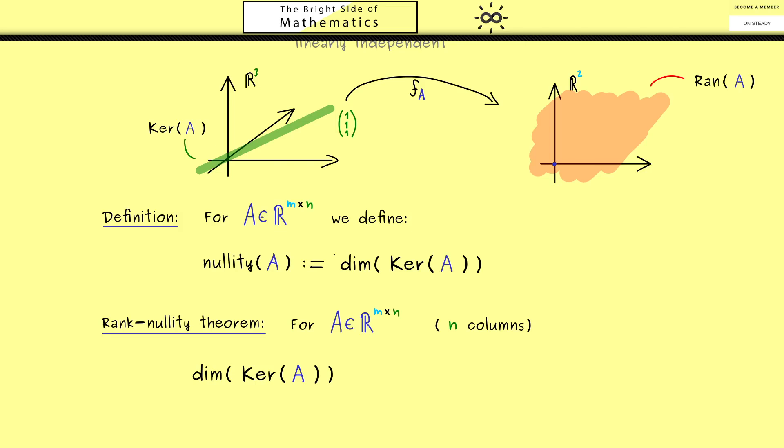So in this example here, we have a one-dimensional subspace that has to collapse to the origin. Okay, and now we can put this into a general formula. So we add two dimensions. We add the nullity and the rank of the matrix. So we have the dimension of the kernel on the left-hand side and the dimension of the range on the right-hand side. And together they have to be equal to the dimension we put in on the left-hand side. So in the matrix picture, this is the number of columns we have. Okay, and this is now the whole Rank-Nullity Theorem.